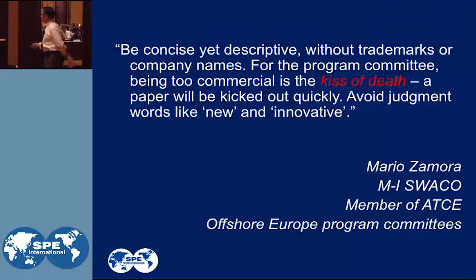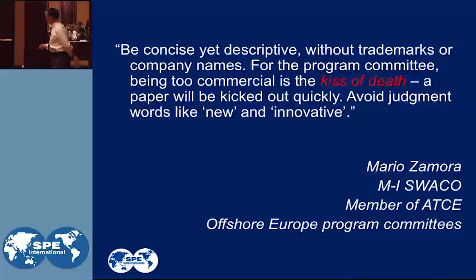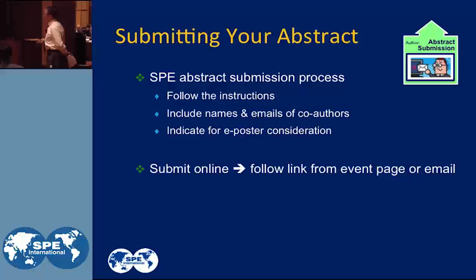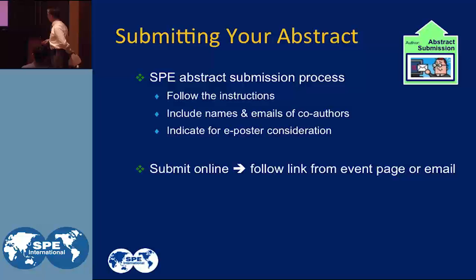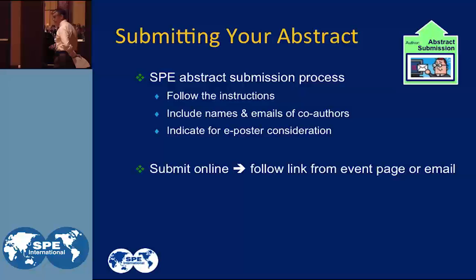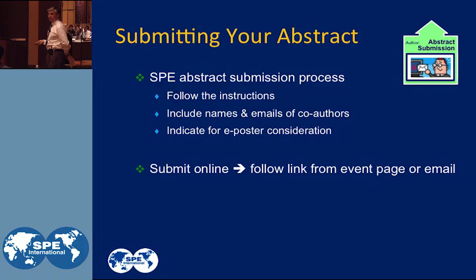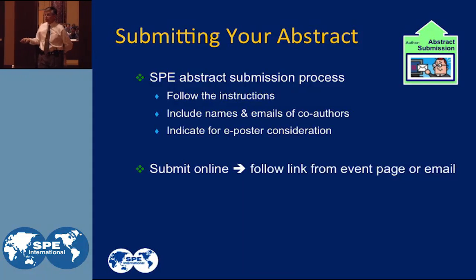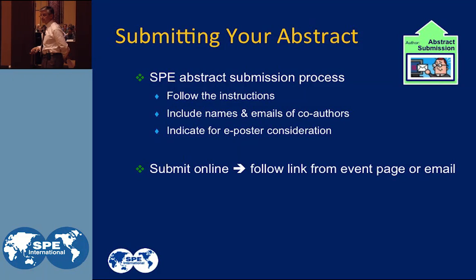No trademarks, no company names — make it general. Be short and to the point. When you submit your abstract, there's the SPE submission process and SPE advertises that. Follow the instructions. Include the names and emails of your co-authors, and indicate whether you want your paper as an e-poster submission. You will submit your abstract online by following the link given in the instructions from SPE.